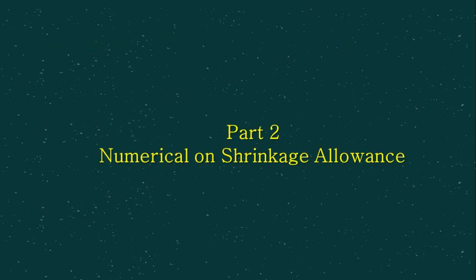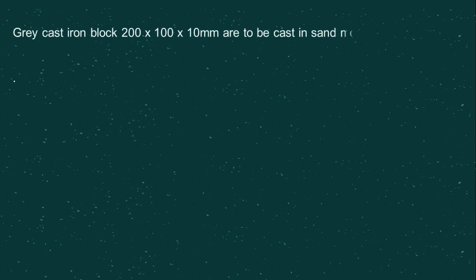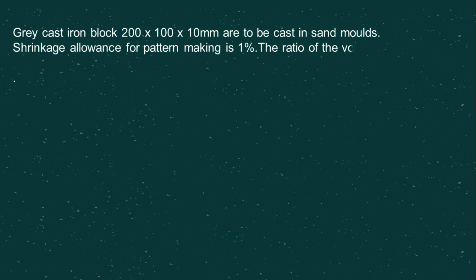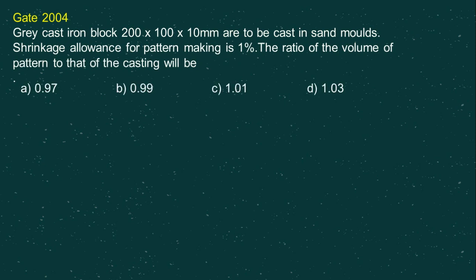Welcome to Part 2 on Numerical on Shrinkage Allowance. Gray cast iron blocks 200 × 100 × 10 mm are to be cast in sand molds. The shrinkage allowance for pattern making is 1%. The ratio of the volume of the pattern to that of the casting will be — options are 0.97, 0.99, 1.01, or 1.03. This question appeared in the 2004 GATE examination.